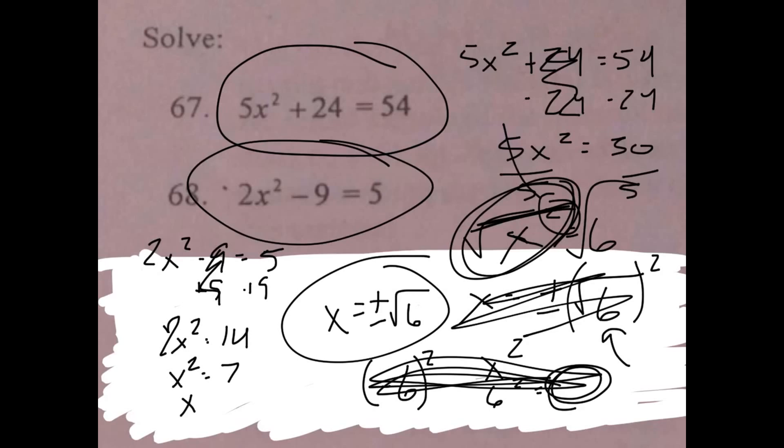And then we do the same thing. Square root, square root. So x equals positive or negative radical 7, and you're done.